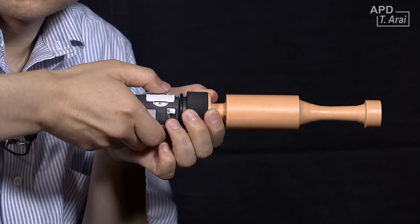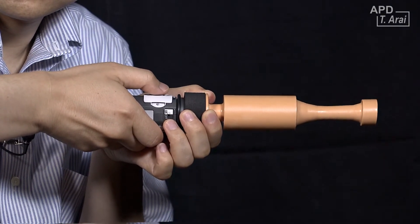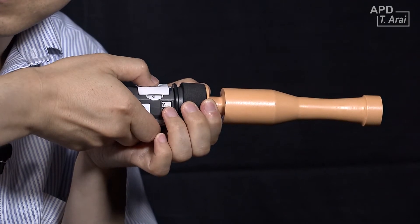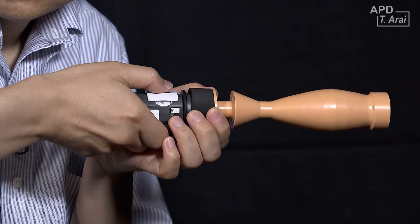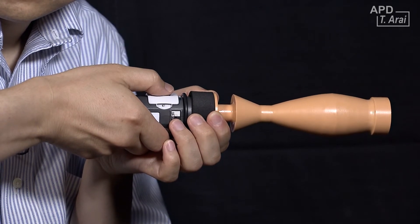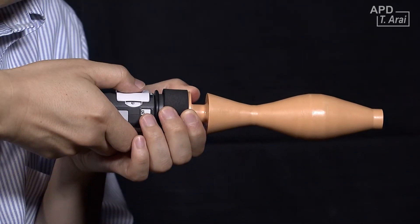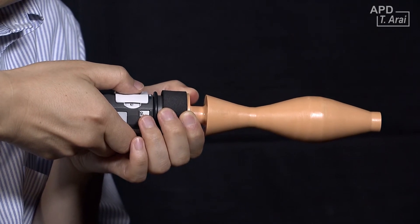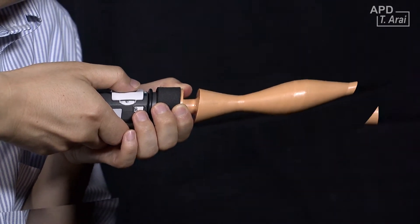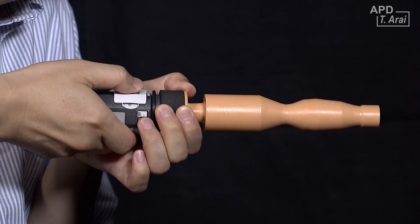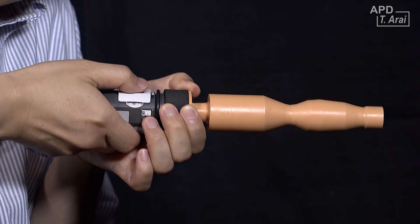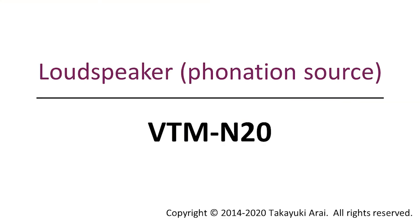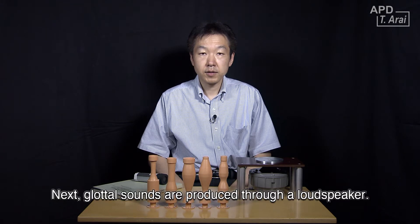With the electrolarynx connected to each model, the models produce vowel sounds including Eee, Aaaa, and variations thereof.